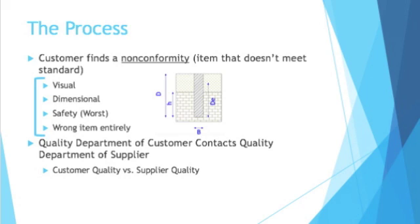The general process is this: the customer will find a nonconformity — an item that doesn't meet the standard. It could be a visual nonconformity, a dimensional nonconformity, it could pose a safety hazard (and these are the worst kind of issues), or it could be the wrong item entirely. The issue could also be any combination of all these.